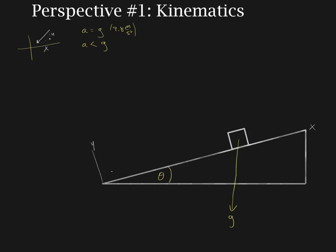In a normal XY coordinate system, gravity is pointing parallel to the Y axis and no components are required. But if we rotate our axis so that it's parallel to the ramp, then g, by pointing straight down, is no longer parallel to an axis. So we can find components of gravity: one parallel to the Y axis — that's G perpendicular, because it's perpendicular to the ramp — and one parallel to the X axis, which is G parallel, because it's parallel to the ramp.